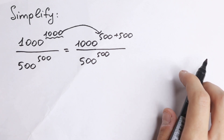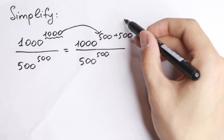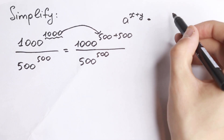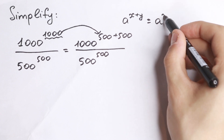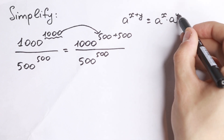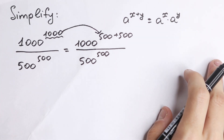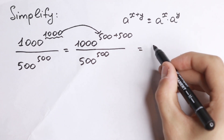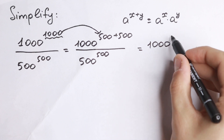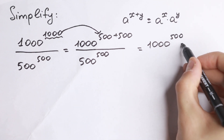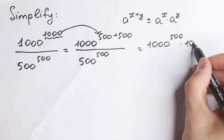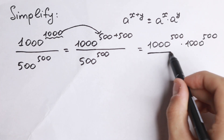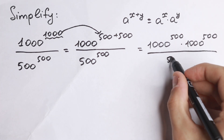What are we going to do next? We need to know a really good rule right here. If we have a to the power of x plus y — if we have a sum in our power — we can write it as a to the power x times a to the power y. So we can easily split it and write it as 1000 to the power 500 times 1000 to the power 500.